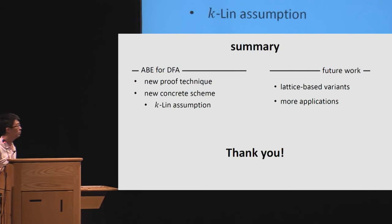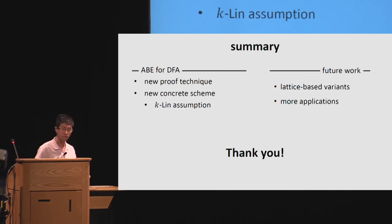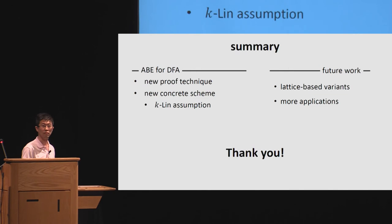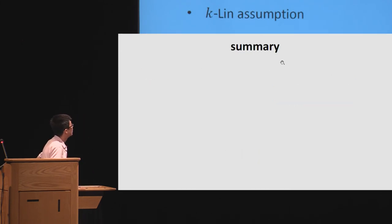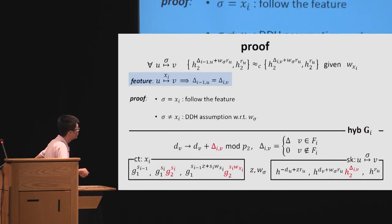If you have a question, please come to the microphone. We have a lot of time for questions. I have one question. Where did you use the selective security? Because we just see this one. So when you define delta, you need the information about x. So without the information about this, we even don't know how to simulate the first secret key. So we have to be selective, and we don't know how to deal with it. Okay, thanks.